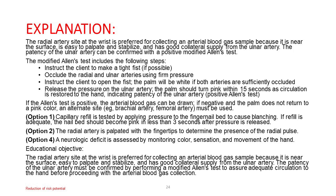Educational objective: The radial artery site at the wrist is preferred for collecting an arterial blood gas sample because it is near the surface, easy to palpate and stabilize, and has good collateral supply from the ulnar artery. The patency of the ulnar artery must be confirmed by performing a modified Allen's test to assure adequate circulation to the hand before proceeding with arterial blood gas collection.